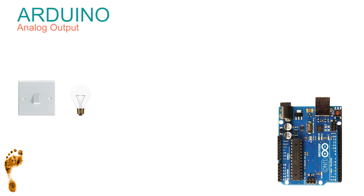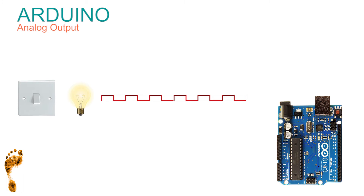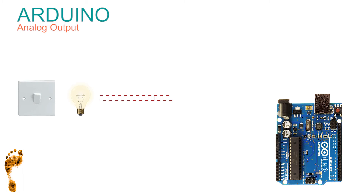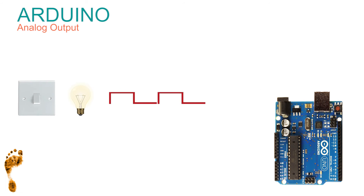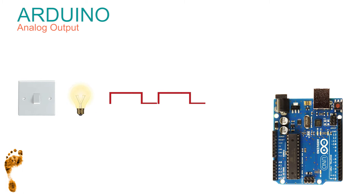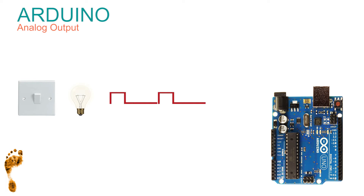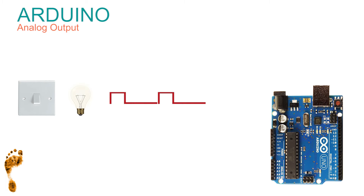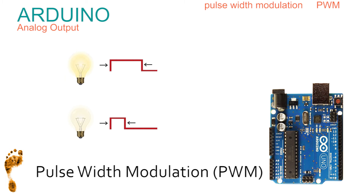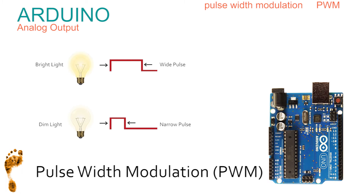Going back to the light switch — we can switch it on or off, quicker and quicker still, just like the flash program. We can switch it so quickly that we no longer see the flashing. What we see is a light that is on for half the time and off for half the time — it therefore appears to be half as bright. If we spend more time with the light on than off it appears brighter; less time on and it appears dimmer. This is the method the Arduino uses to fake an analog output — it's called pulse width modulation, or PWM.